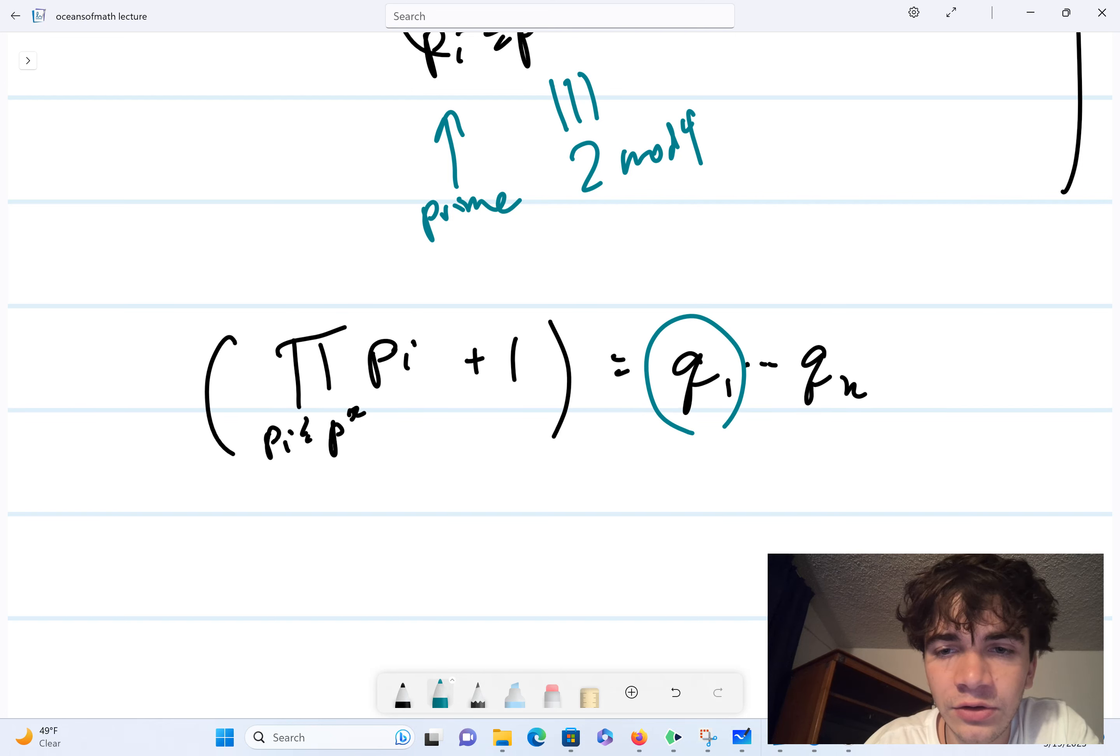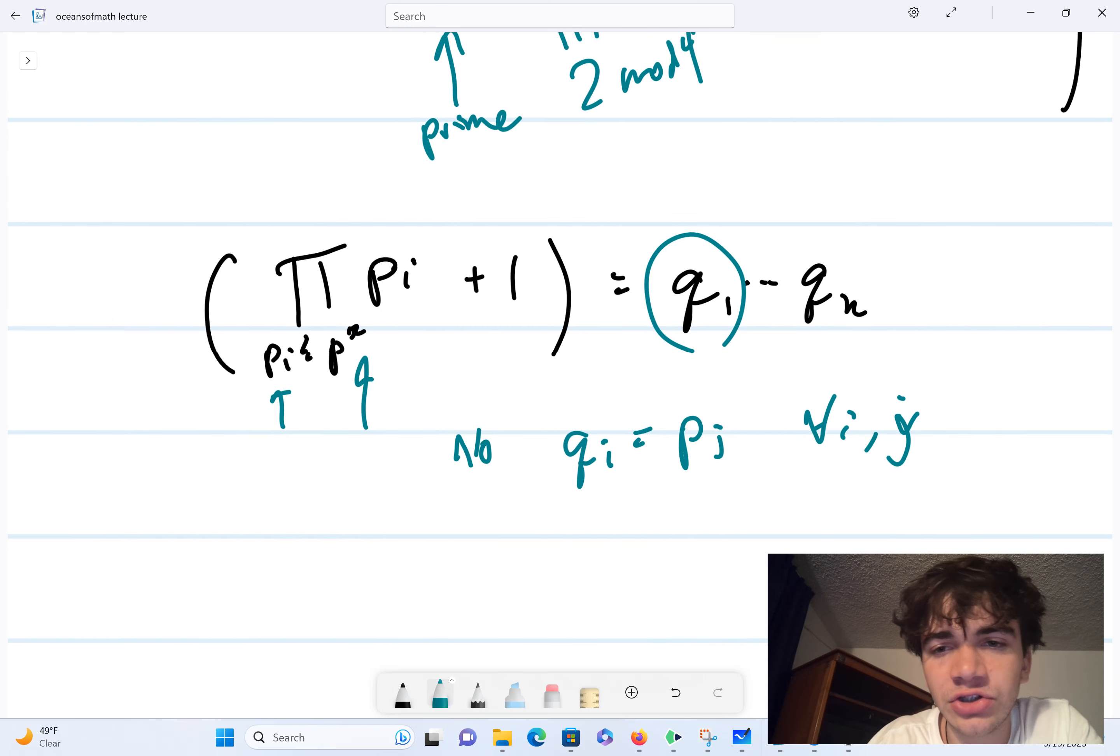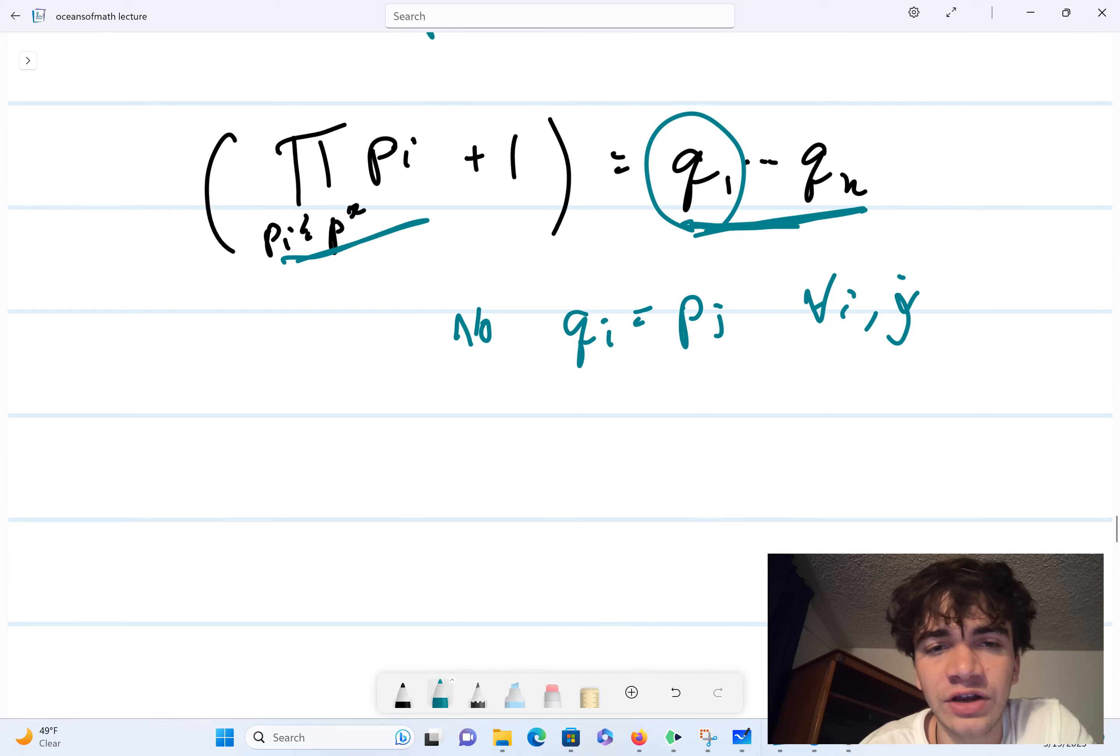None of these prime factors can belong to p_i. So no q_i is equal to p_j for all i and j. So this product shares no common factors with the prime factorization of everything in parentheses here. And that's because suppose that q sub i were in here, so suppose that like q sub 3 or whatever was inside this product, then it would divide this term, and it would also divide the term on the right, and therefore, it would have to divide this 1 here, which is obviously impossible. So that's the reason why these prime factors are distinct from everything in the product.